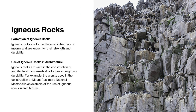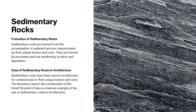Igneous rocks are formed from solidified lava or magma and are known for their strength and durability. They are used in the construction of architectural monuments due to these properties. Sedimentary rocks are formed from the accumulation of sediment and are characterized by their unique texture and color, formed by processes such as weathering, erosion and deposition. They have been used in architecture for centuries — the limestone used in the construction of the Great Pyramid of Giza is a famous example of sedimentary rocks in architecture.